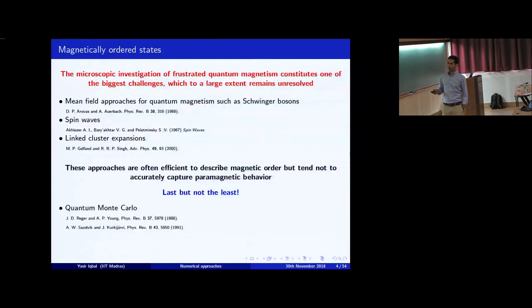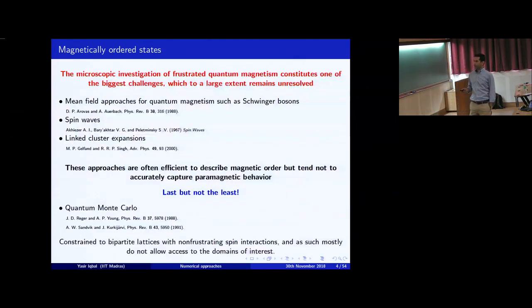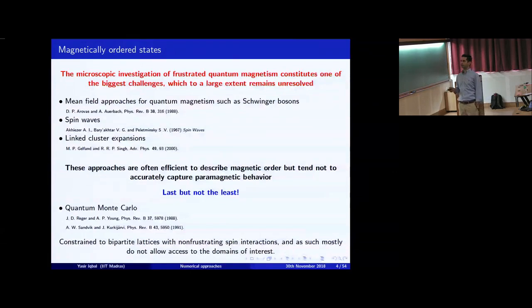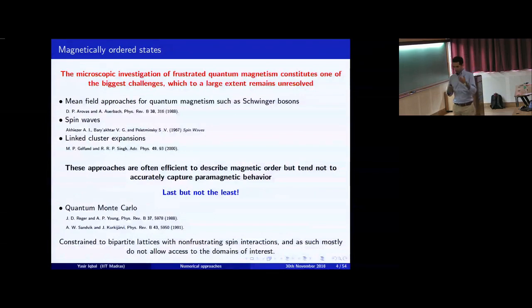As Arnab gave a very nice talk on quantum Monte Carlo — this is of course a numerically exact method. However, it suffers from the severe sign problem, which constrains you to bipartite lattices, where the two sub-lattice Néel order is not frustrated — a simple cubic, body-centered cubic, or square lattice with no parametric frustration. This regime is very restricted and does not allow you access to the real domain of interest, which is competing interactions that frustrate the system and can give interesting novel ground states, as Yogesh showed in his talk.